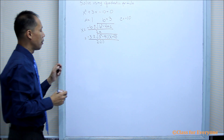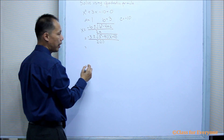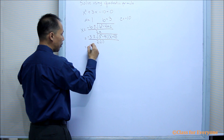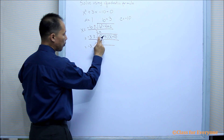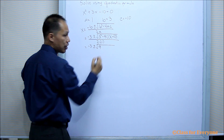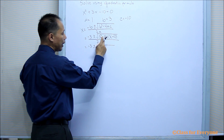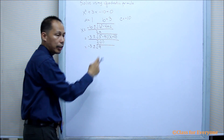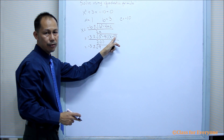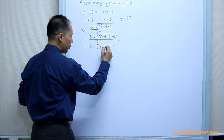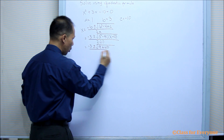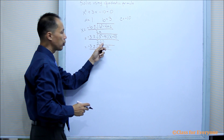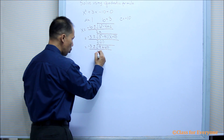By simplifying, we'll have negative 3 plus or minus the square root of 3 squared, which is 9. Negative 4 times 1 is negative 4, times negative 10 gives us positive 40, all over 2 times 1, which is 2.